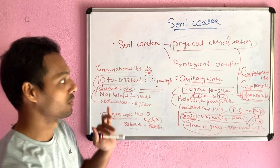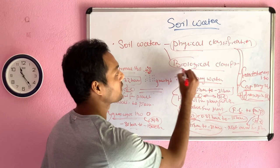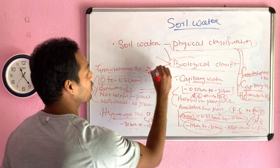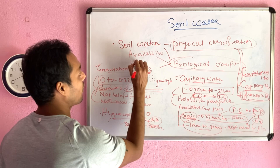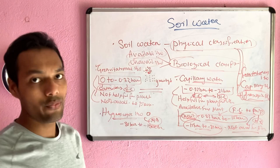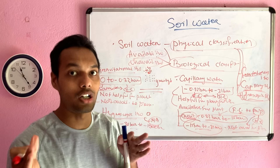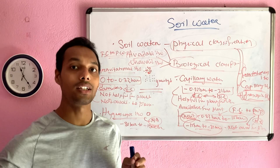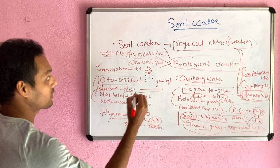Physically, soil water behaves as gravitational water, capillary water, and hygroscopic water. Now let's see the biological classification. Based on biological classification, soil water is classified into available water and unavailable water. Available water is that capillary water which is available for plant uptake.